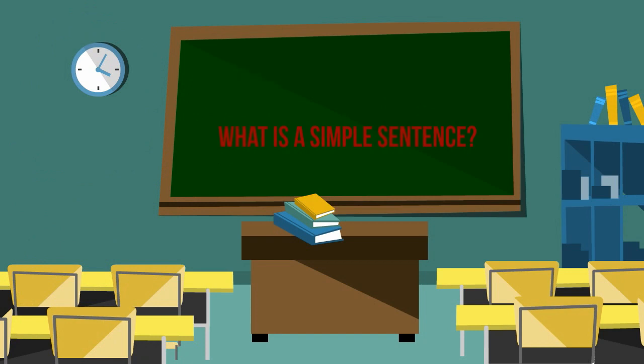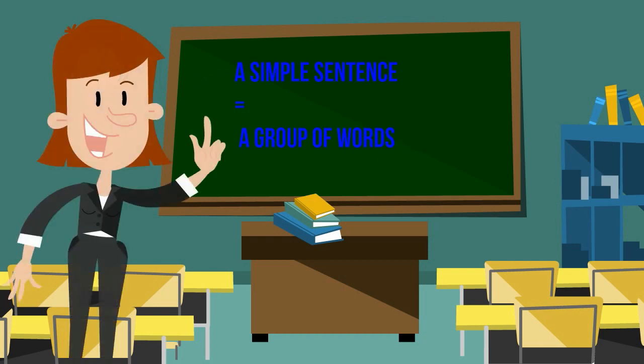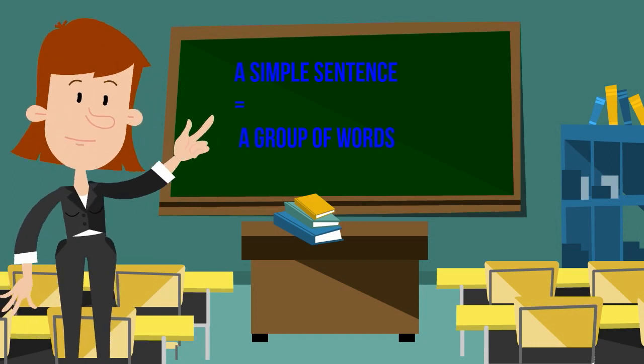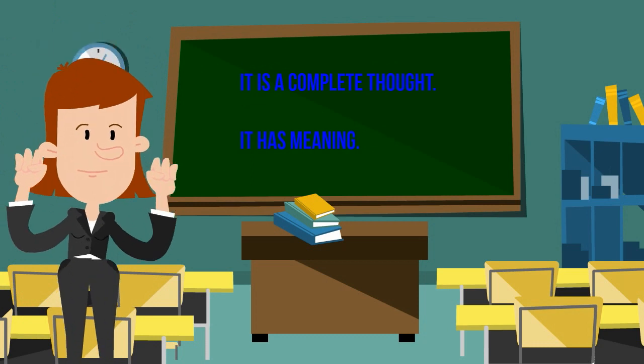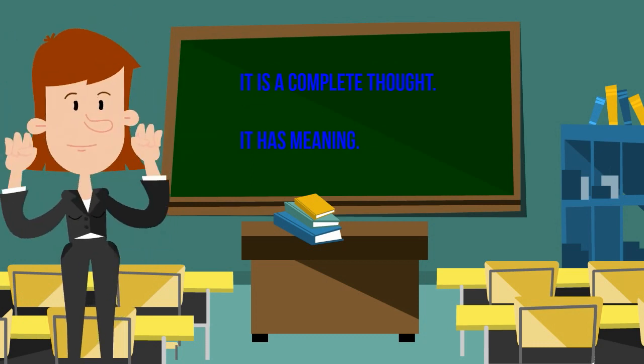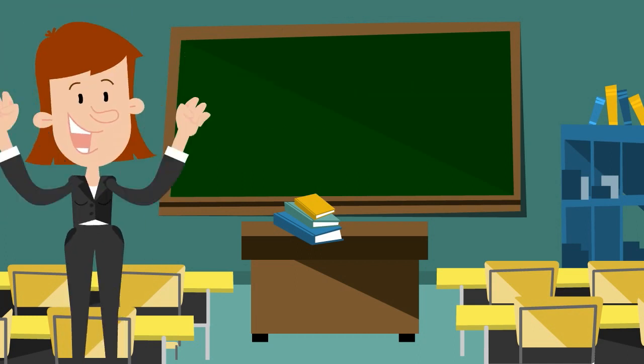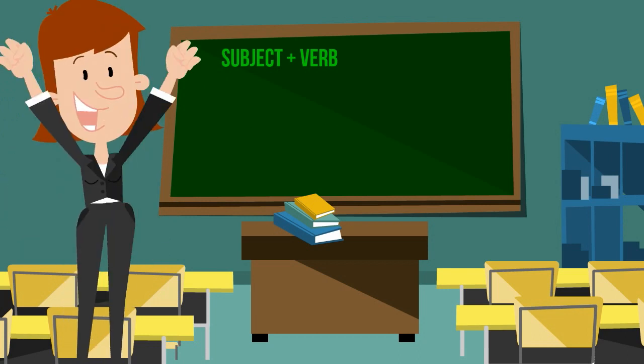What is a simple sentence? How would you describe it to another learner? A simple sentence is a group of words. It's a complete thought. It has meaning, and there is a subject and a verb.